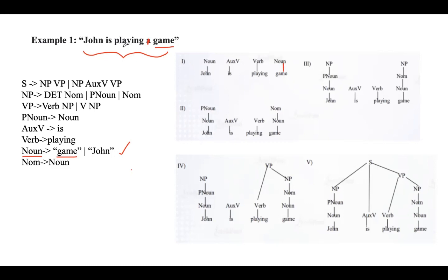Next, 'playing' exists in a production, so it is replaced with the LHS — Verb. Then 'is' is matched with a substring in the given string, so replace 'is' with Auxiliary Verb. Finally, 'John' exists in a production, so replace it with the LHS — Noun. You repeat this process until you reach the start symbol, because that is the goal in bottom-up parsing.